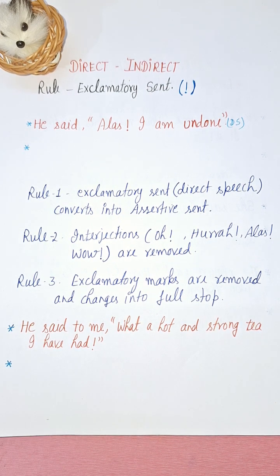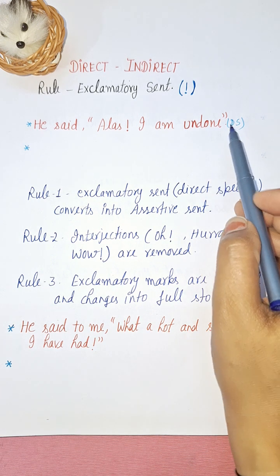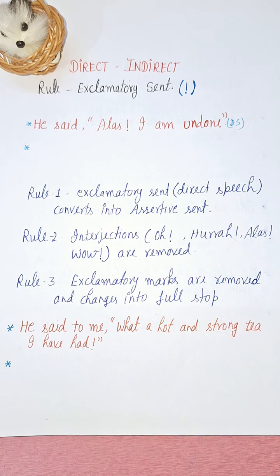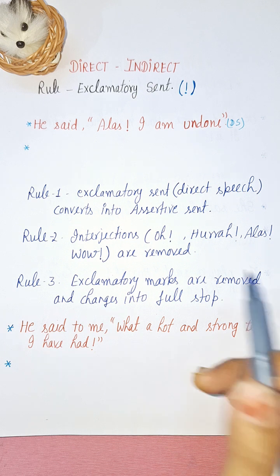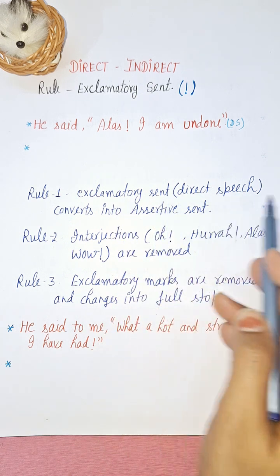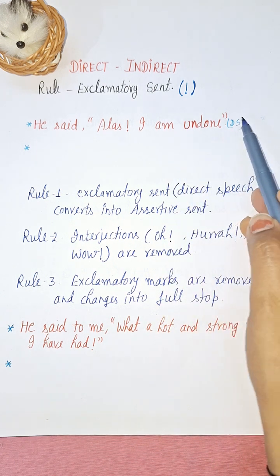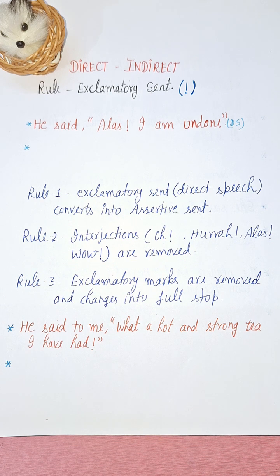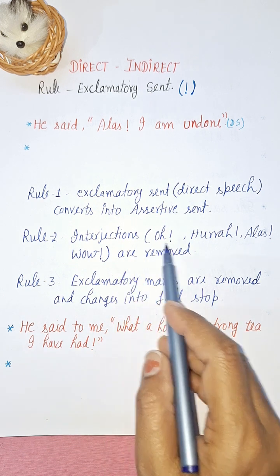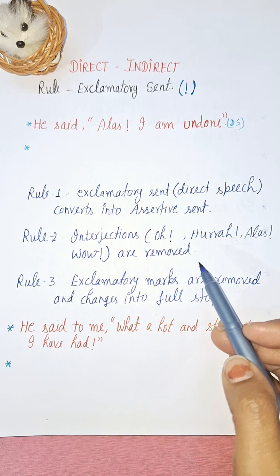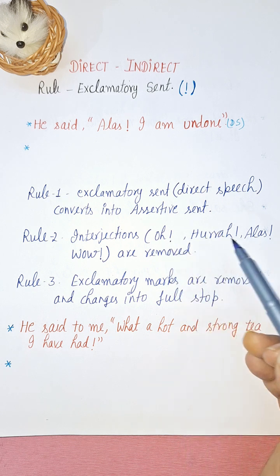Now, the rule for conversion of an exclamatory sentence from direct speech into indirect speech. Rule one: the exclamatory sentence in direct speech converts into an assertive sentence in indirect speech. Rule two: interjections like 'oh,' 'hurrah,' 'alas,' 'wow' are all removed when you convert into indirect speech.